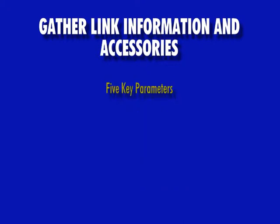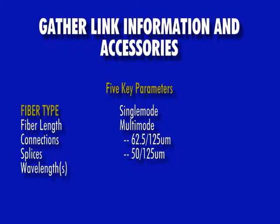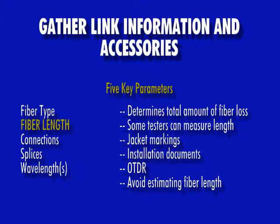There are five key parameters that apply to any fiber optic test. First is the fiber type, which will be either single mode or multimode — in the case of multimode, either 62.5 or 50 micron. Next is fiber length; it is important to know how much fiber is in the link to determine acceptable loss. Some OWL testers, including the Fiber OWL 4, can measure end-to-end length automatically. Otherwise, the user can use jacket markings, installation documents, or other methods such as OTDR.